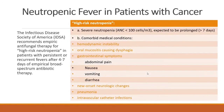In patients with neutropenic fever and cancer, there are recommendations from the Infectious Disease Society of America for empiric antifungal therapy for high-risk neutropenia in patients with persistent or recurrent fevers after four to seven days of broad-spectrum empiric antibiotics. High-risk factors include high-risk neutropenia and hemodynamic instability. You should be concerned when they have gastrointestinal symptoms such as abdominal pain, nausea, vomiting, or diarrhea, or new-onset neurological changes.